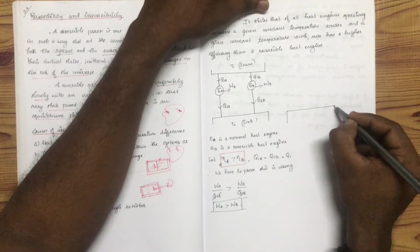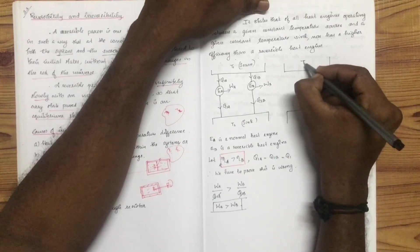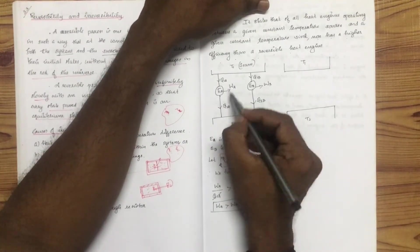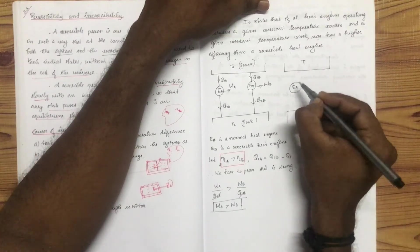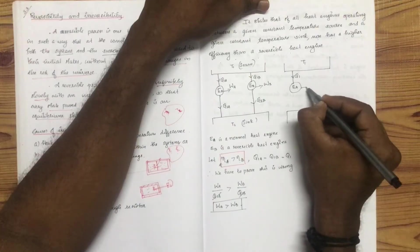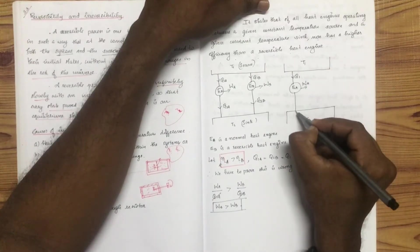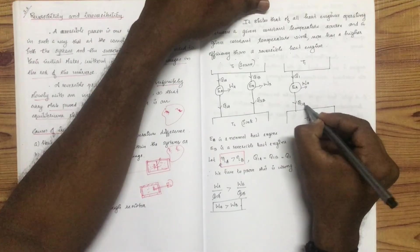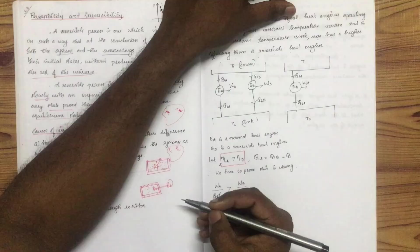We will reverse heat engine EB. That will reject Q2A amount of heat and absorb Q1A amount of heat. This is the reverse operation.